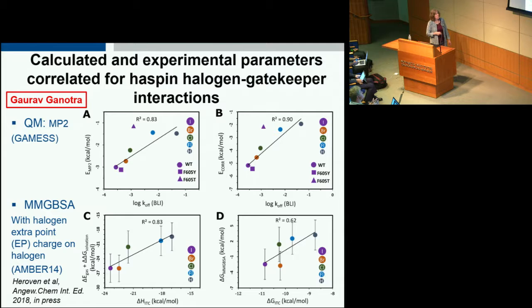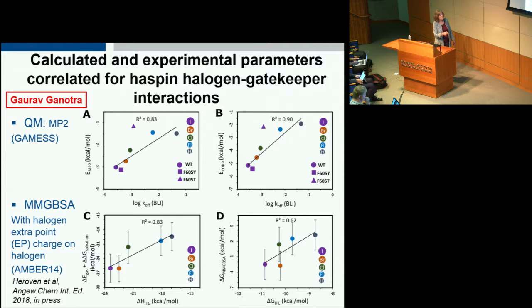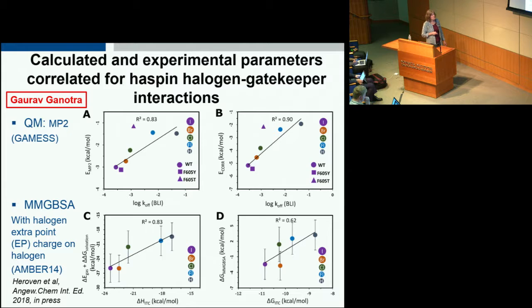To understand this computationally, we did quantum mechanical calculations of the interaction between the ligand and the aromatic residue. Plotted against the experimental off-rates, the computed interaction energy shows good agreement, apart from an outlier for a threonine mutant without the aromatic interaction, and this is largely due to the correlation energy interaction. With the quantum mechanical model we could only look at a small bit of the binding site, so we also did MMGBSA calculations to compute the binding free energy considering the whole protein. Here it was very important to use the halogen extra point model to capture the sigma hole effect, giving a reasonable correlation with the binding enthalpy.